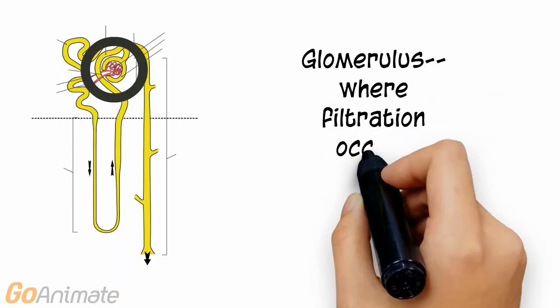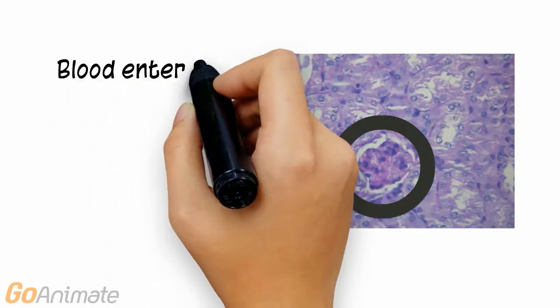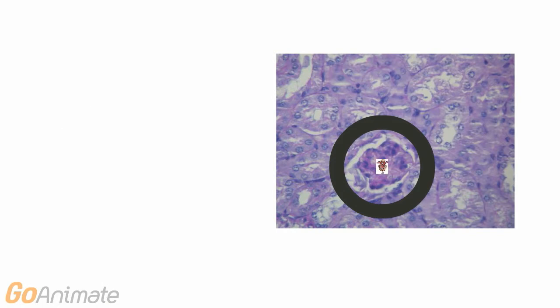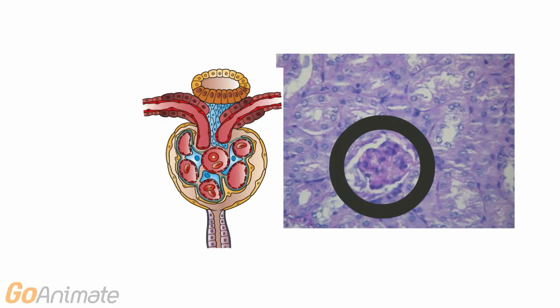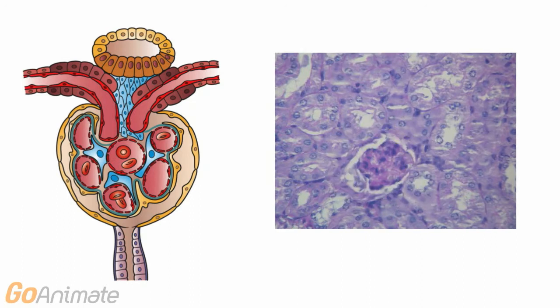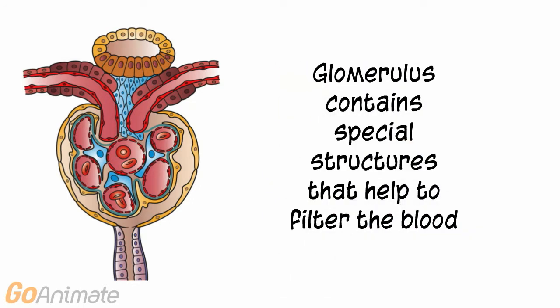The part of the nephron where filtration occurs is called the glomerulus. Here's a picture of an actual glomerulus. Blood goes into the glomerulus and filtrate comes out. Here's a diagram of a glomerulus. The glomerulus contains special structures that help to filter the blood.